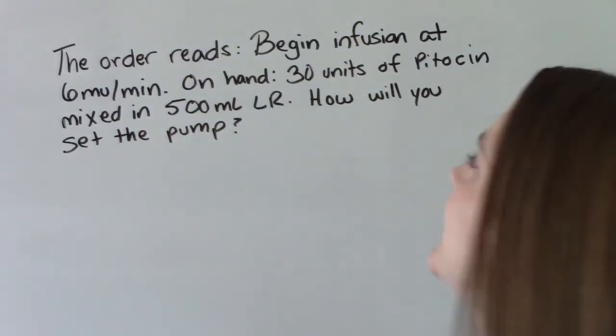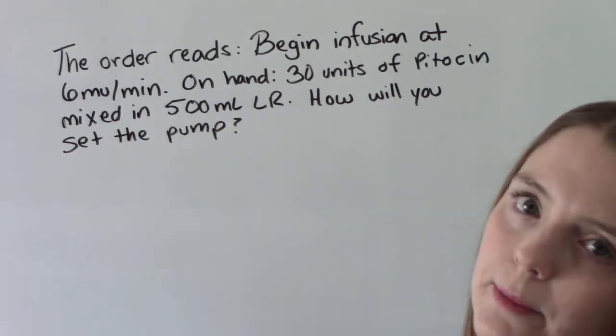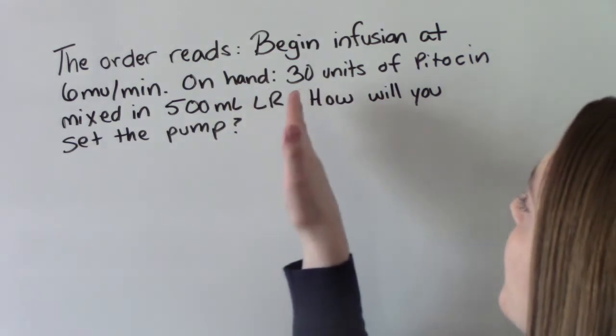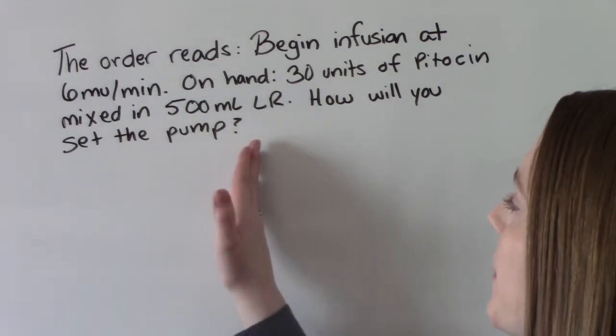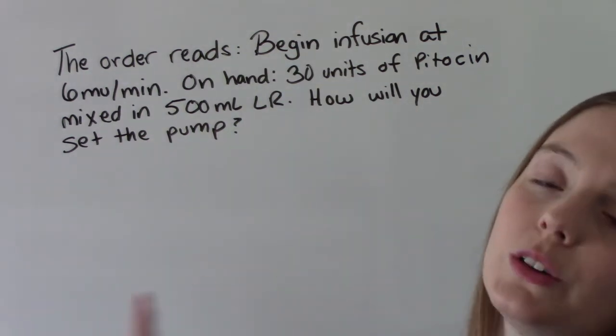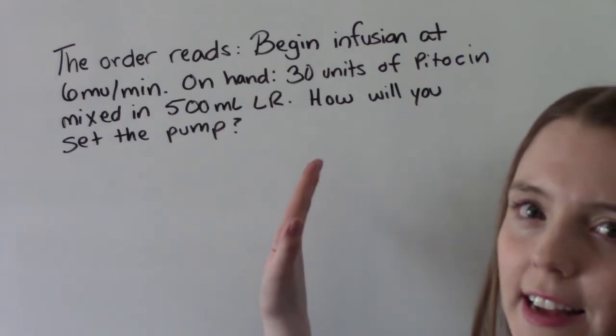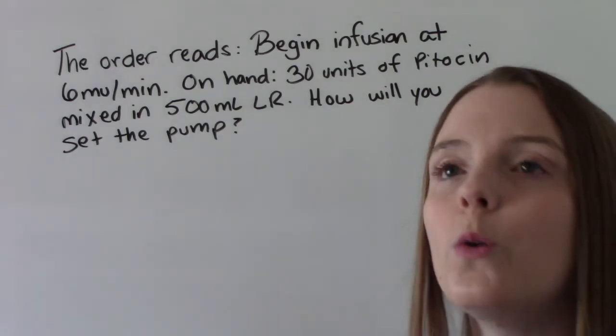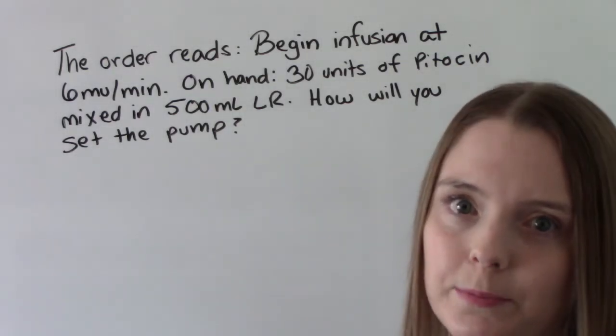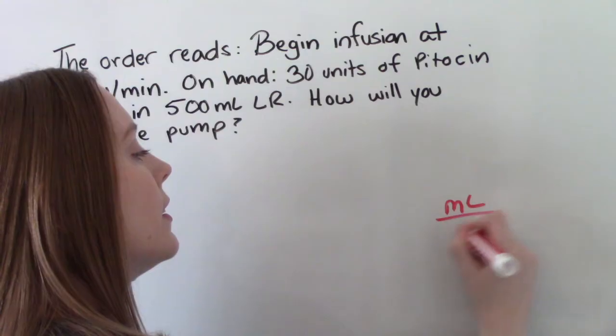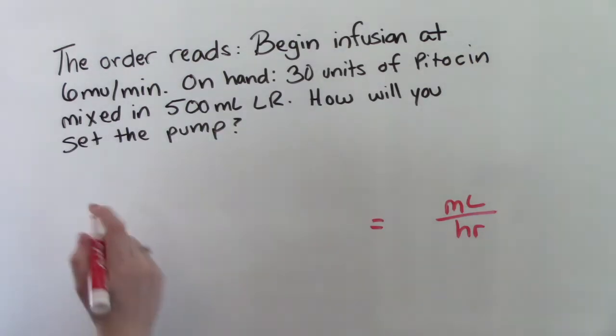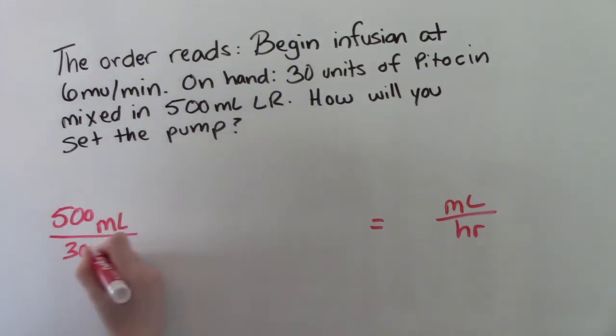So our order says begin infusion at 6 milli units per minute. On hand, we have 30 units of Pitocin mixed in a 500 mL LR bag. How will you set the pump? So what are we looking for? We're looking for mLs per hour. It didn't actually say that to us, right? It says how will you set the pump? So we need to know that when we set a pump, we're setting it in mLs per hour. So it's asking for mLs per hour. So that's what we're going to put in our answer. So let's set it up. So we need mLs in our numerator. Where is that? Right here. So 500 mLs is the same as 30 units.